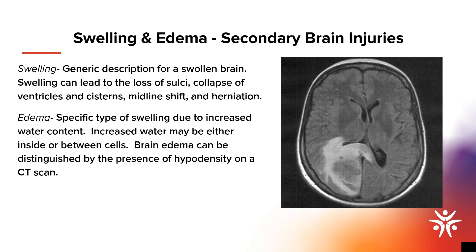Now let's cover secondary injuries that may form. The first is swelling, which is a generic description for a swollen brain. Swelling can lead to the loss of sulci, collapse of ventricles and cisterns, midline shift, and herniation. Edema, on the other hand, is a specific type of swelling due to increased water content — either inside or between cells. Brain edema can be distinguished by the presence of hypodensity on a CT scan. These are both codable injuries but must be related to a head injury. When a patient is diagnosed with a generic closed head injury, carefully review the chart for mention of a headache or concussion, which can change your coding.